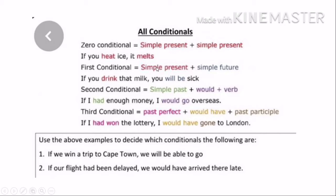The first conditional is simple present and simple future. When you have 'if', it goes with simple present, and the result is with 'will' and the verb in base form. If you drink that milk, you will be sick. Second conditional: simple past, and the result is with 'would' and the verb in base form. Remember that the second conditional is for imaginary suppositions, while the first conditional is something that can become true. If I had enough money, I would go overseas — 'had' is simple past and the result uses 'would' with the verb in base form.